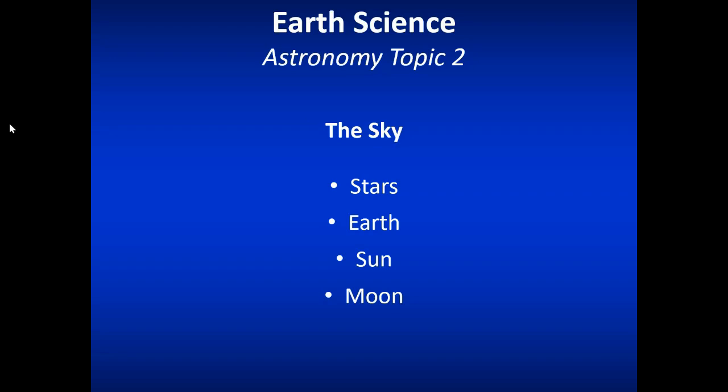Let's begin talking about the sky. When you look up in the sky, you see the sun during the day, the stars at night, and of course the moon. All the motions that create rising and setting and the sun at different heights are controlled by the Earth and its orbit. So when we talk about the sky, it's important to touch on the stars and how they move, the Earth, the sun, and the moon.